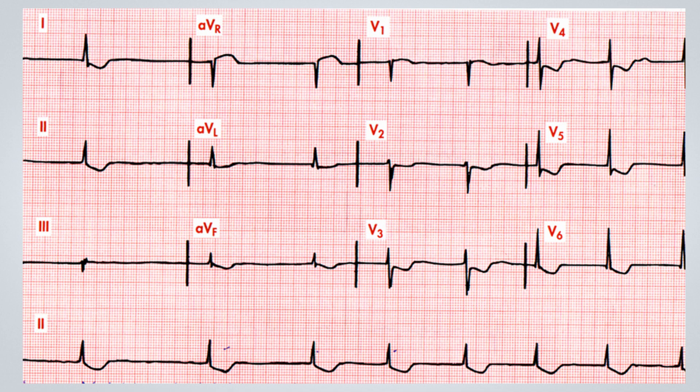Examining the electrocardiogram at hand, the striking aspect is that we are unable to discern the P wave. As we analyze the QRS complexes, we notice that despite being bradycardic — meaning we're observing a bradycardic rhythm — it remains irregular. This observation strongly supports the likelihood of atrial fibrillation.